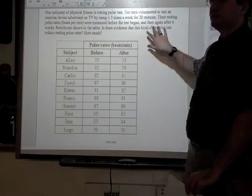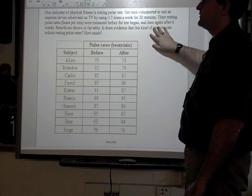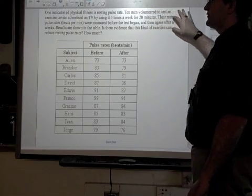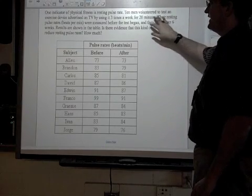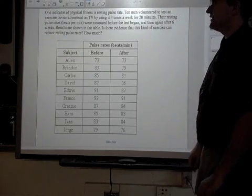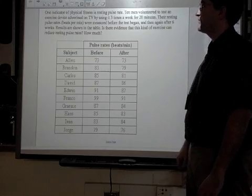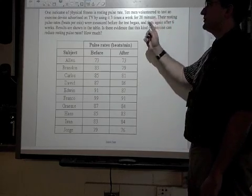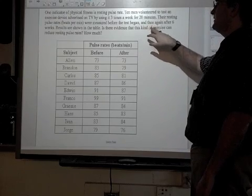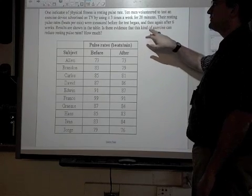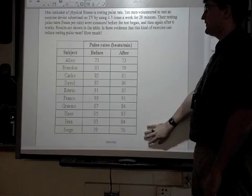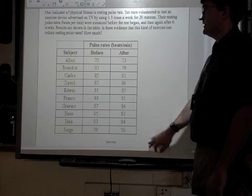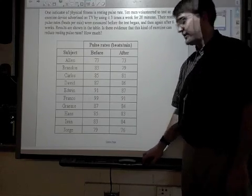So to read this, hopefully you can read it. One indicator of physical fitness is resting pulse rate. Ten men volunteered to test an exercise device advertised on TV by using it three times a week for 20 minutes. Their resting pulse rates in beats per minute were measured before the test began and then again after six weeks. Results are shown here. Is there evidence that this kind of exercise can reduce resting pulse rates, and by how much?